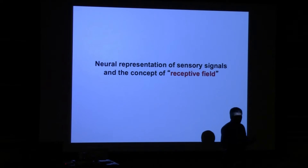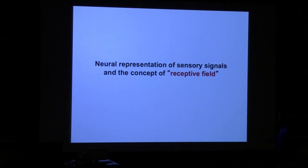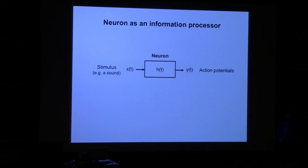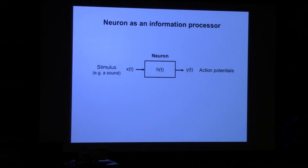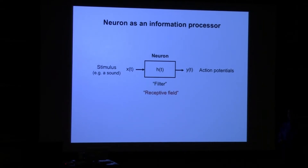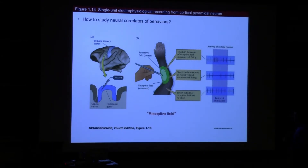Following the receptive field discussion, we will discuss how signals are represented by the nervous system through action potentials. For engineers, if you see a neuron as a filter — the stimulus coming in is x(t) — the neuron will generate action potentials. In a linear system, this would be the impulse response or transfer function. In biology, this is what we call the receptive field. The receptive field describes a sensory neuron's response to external stimulus.